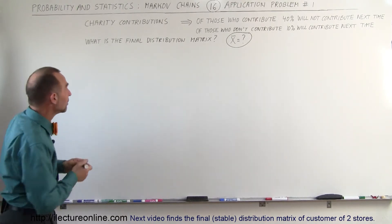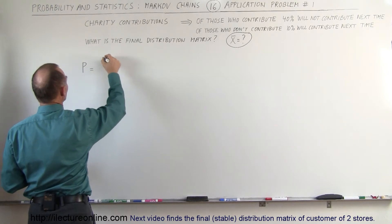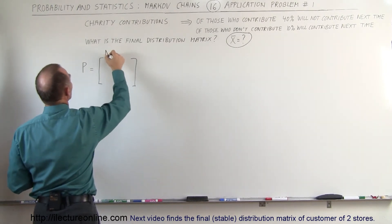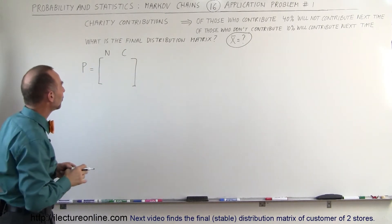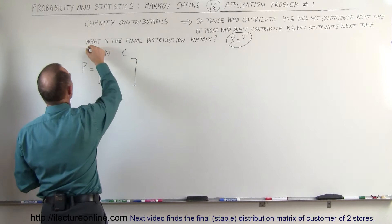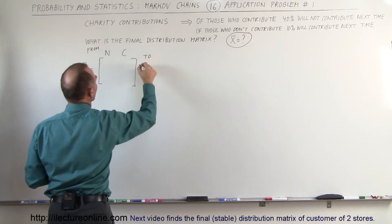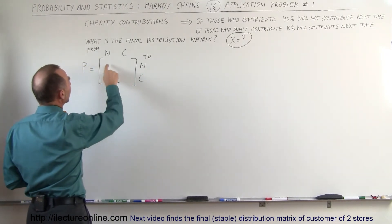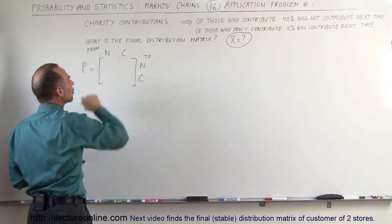First we have to set up the probability matrix. So the probability matrix is going to have two states. The states is going to be not contributing and contributing. It doesn't matter which order we put it in, of course. And this will be the from state, and this is the to state. So if they are not contributing, what is the percentage that will continue to contribute?